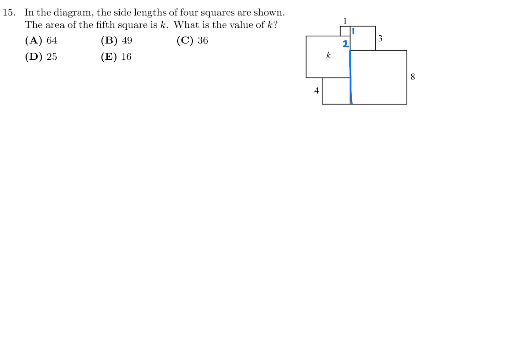This distance is 8. And this distance is 4. Therefore, this distance from here to here will be 4. So that means the side length of that square that has the K inside of it is 6. So the area is 6 times 6. And that is equal to K. Therefore, K is 36. So number 15, the answer is C.